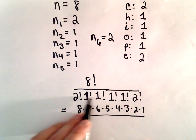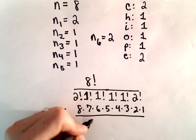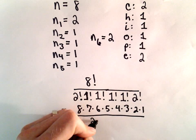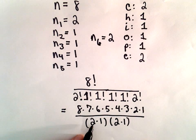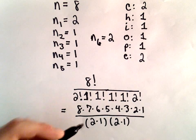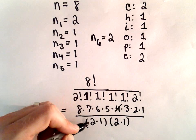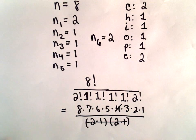Well, all the 1 factorials are just 1. We've got 2 factorial, which is 2 times 1. We've got another 2 factorial, which is 2 times 1. Well, this is 2 times 2, which is 4. So we could get rid of the 4 in the numerator, the 4 in the denominator.